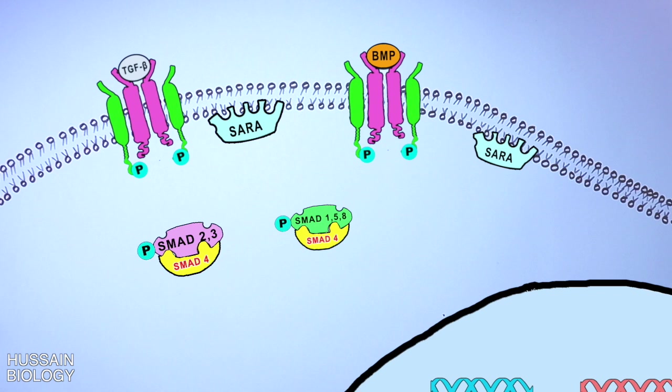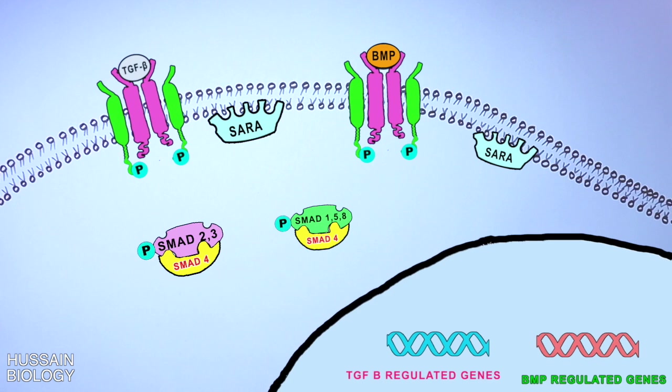So we have two different pathways activating two different SMAD molecules. Now we have complexes of R-SMAD molecules and Co-SMAD molecules. In the next step, these complex molecules or the phosphorylated R-SMAD Co-SMAD complexes enter the nucleus.